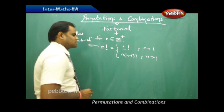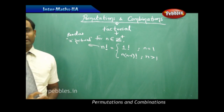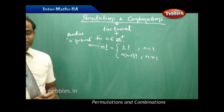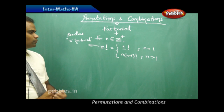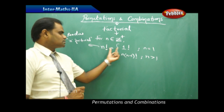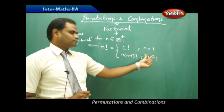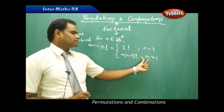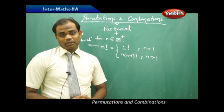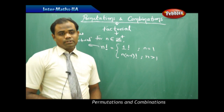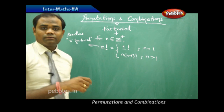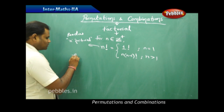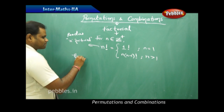So we understand n factorial in two ways: it equals 1 if n equals 1, and it equals n times (n minus 1) factorial if n is greater than 1. Let's see how we can understand this more clearly through example problems.